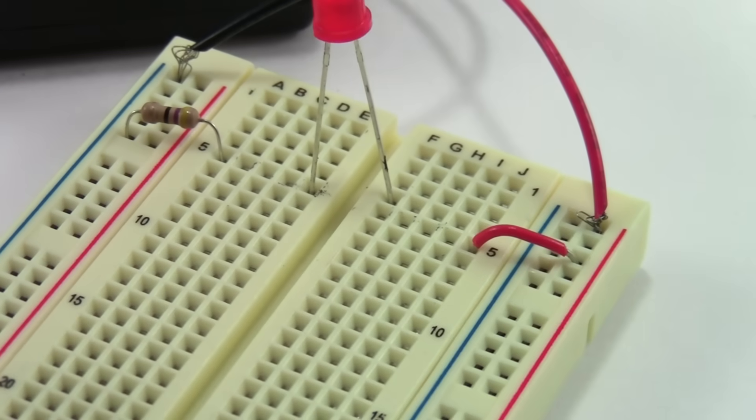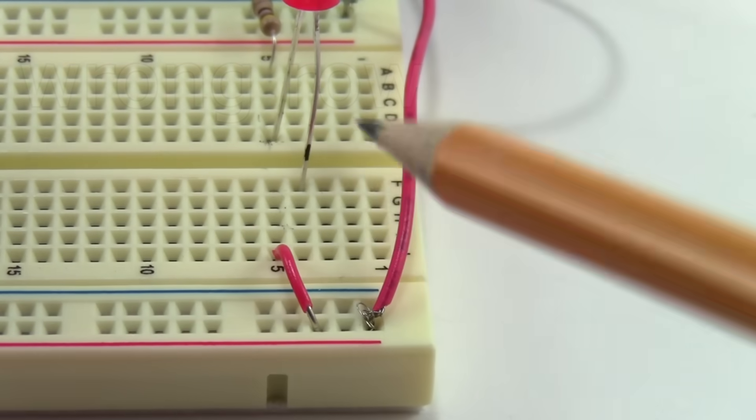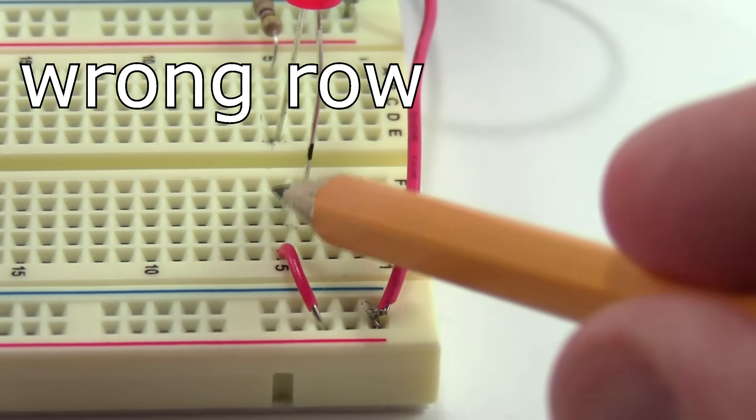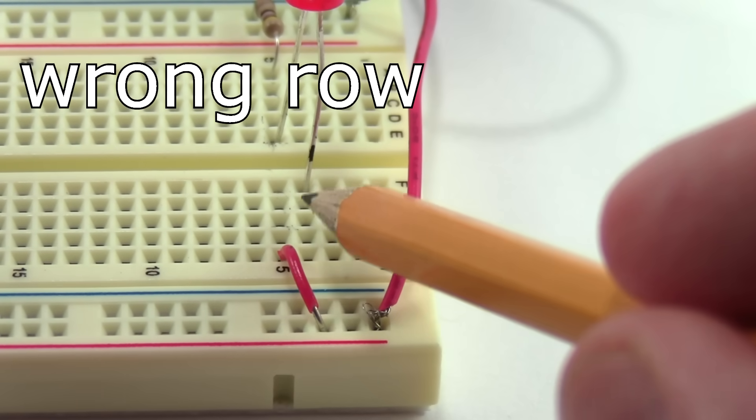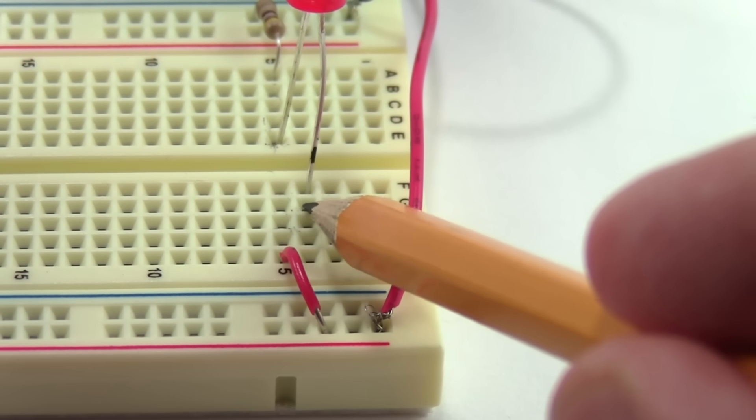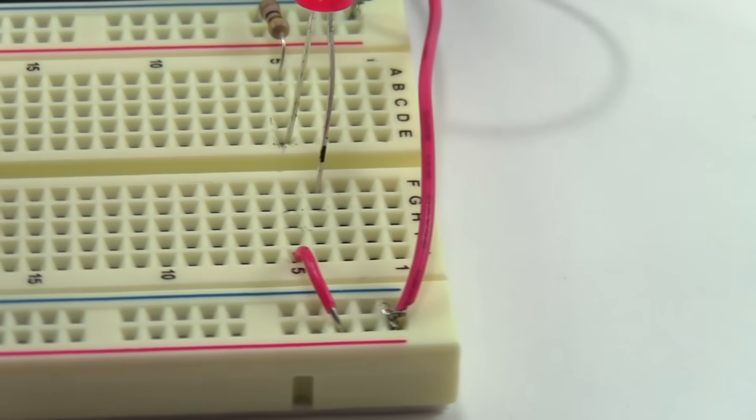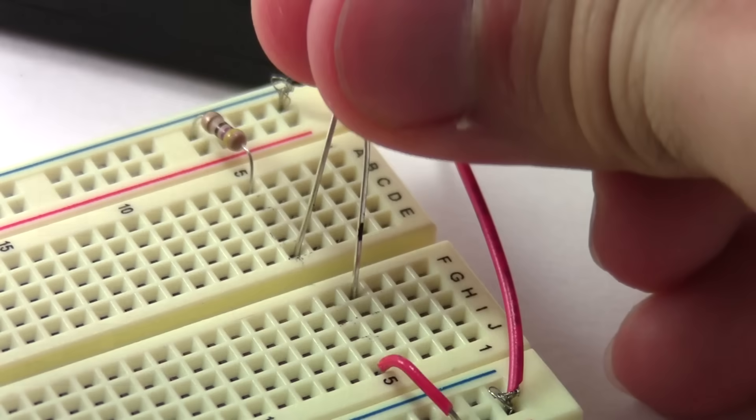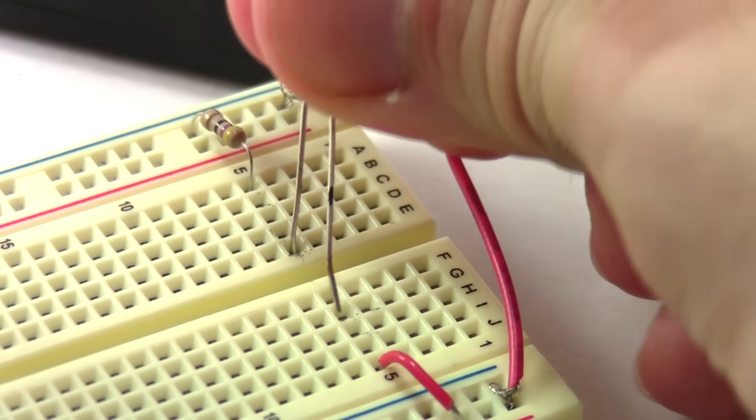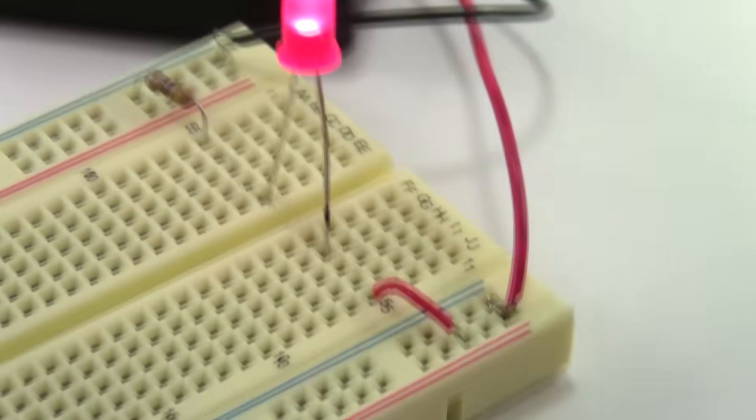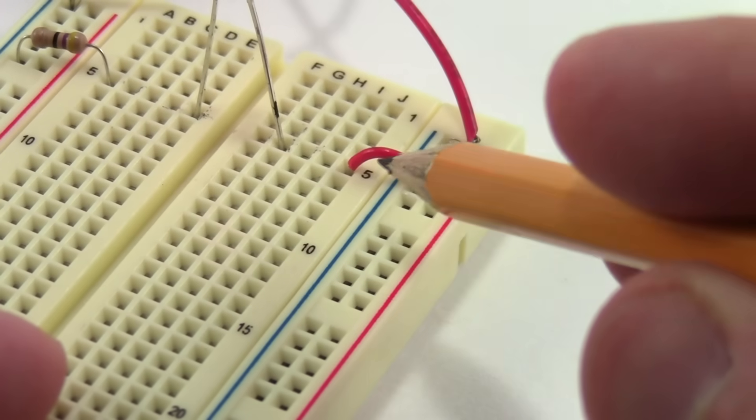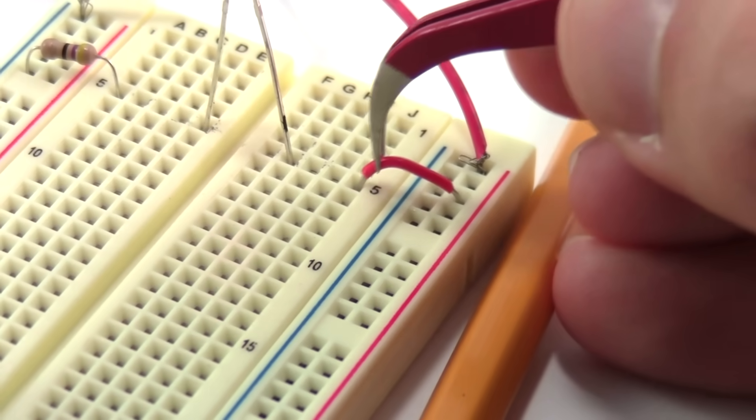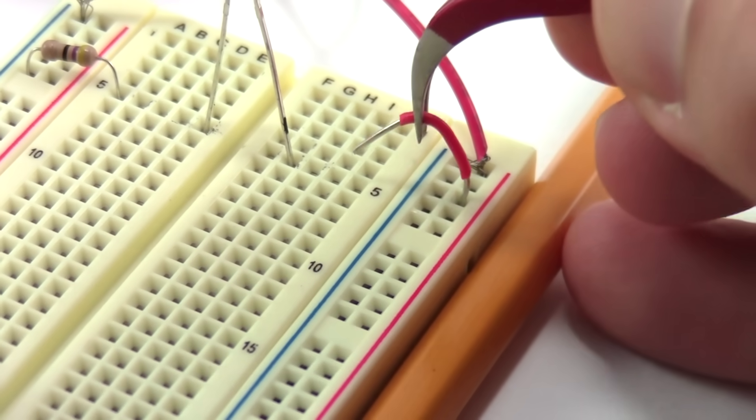When we zoom in, you can see that one of the LED leads is actually in the wrong row. Notice how all of the connections are in row five except for this lead of the LED, which is in row four. Remember that rows four and five are not electrically connected, so in order for electricity to have a complete path to flow, we have to move that LED lead over to row five and then the LED will light up. Every time you build a circuit, you should always double check your wiring to make sure your connections are in the right place.